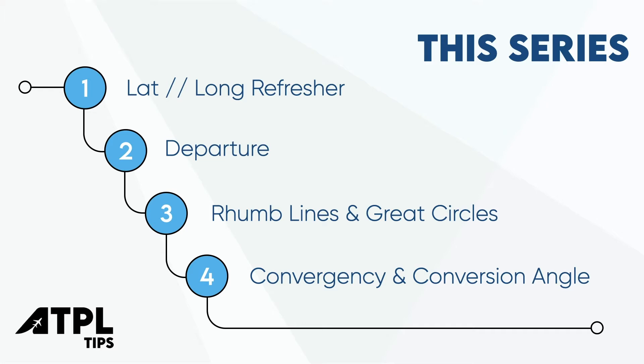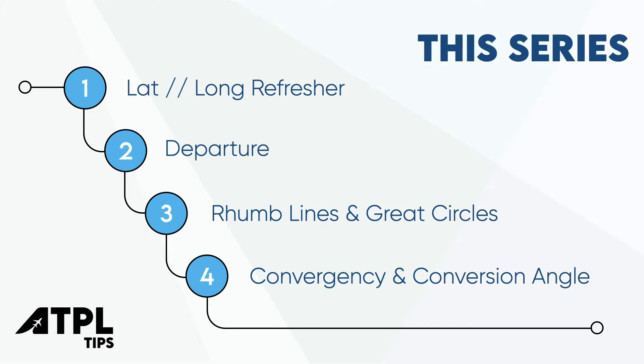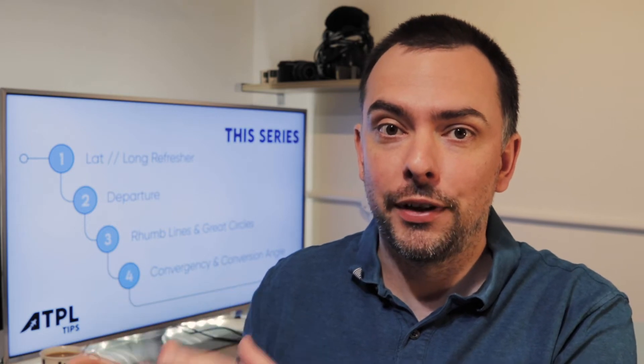Video two will cover the departure formula and show you why the formula is what it is. Video three will cover rhumb lines and great circles. And finally, video four will be about convergency and conversion angle. I always try to not assume too much prior knowledge, but I completely realize that you may not need a refresher on latitude and longitude, which is why I'm making this a standalone video at the beginning of the series. If you would benefit from a refresher, or if you want to learn how to use the DMS button on your calculator — which will save your life — then stay here. Otherwise, maybe click on over to video two and start having a look at departure.